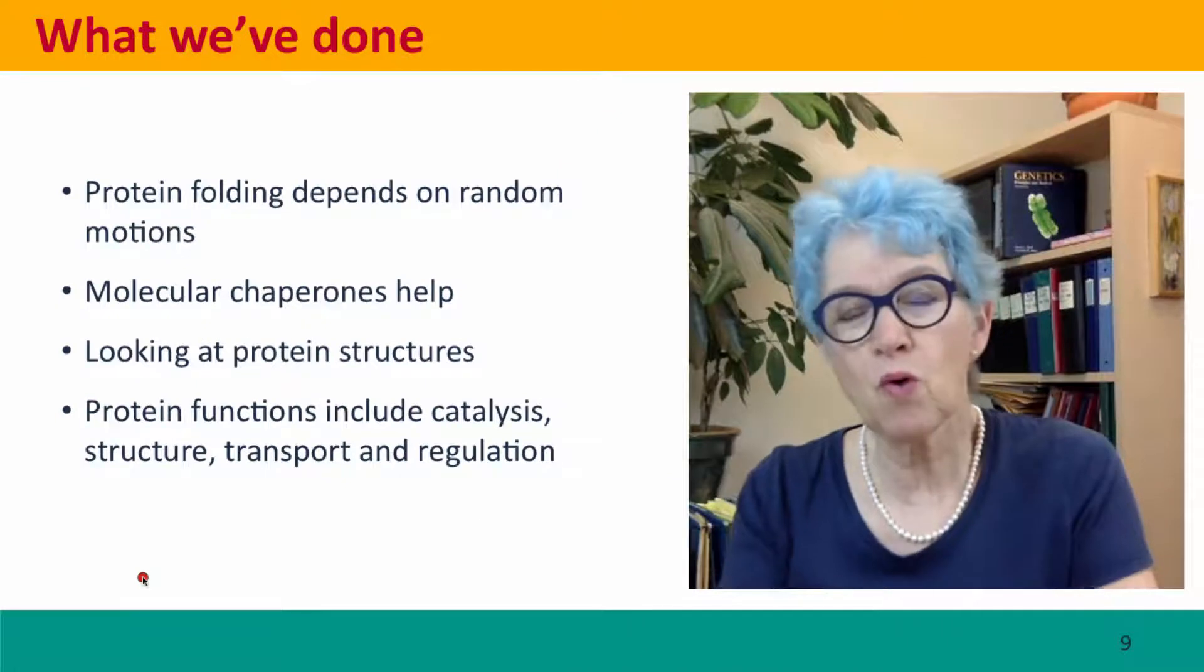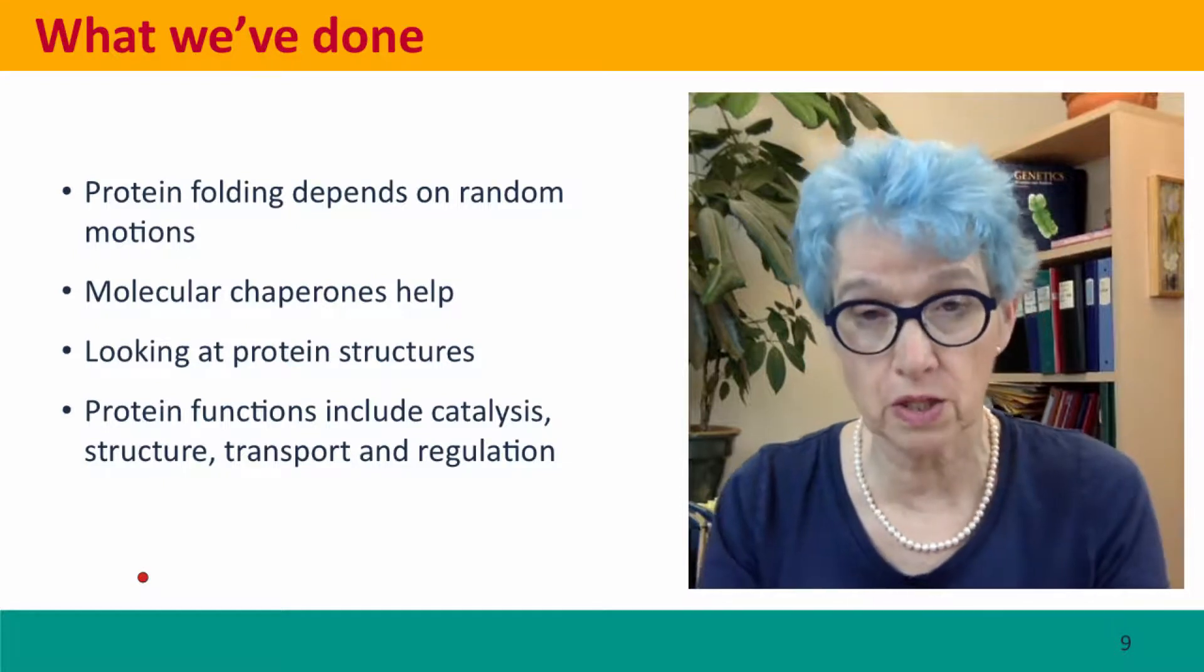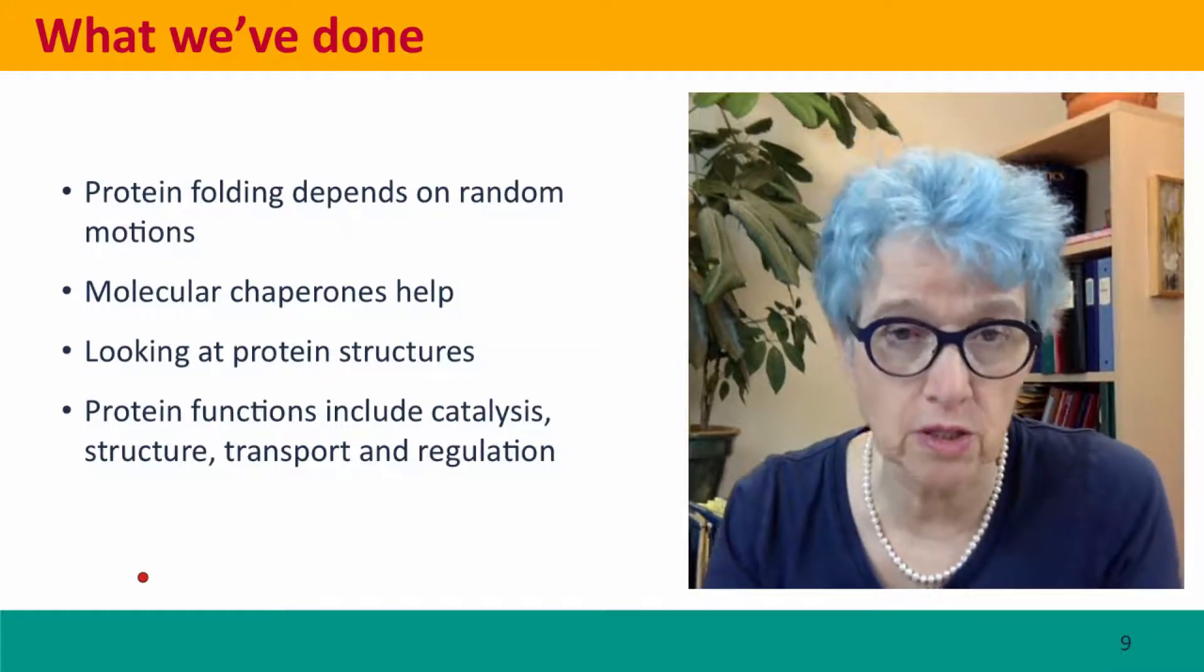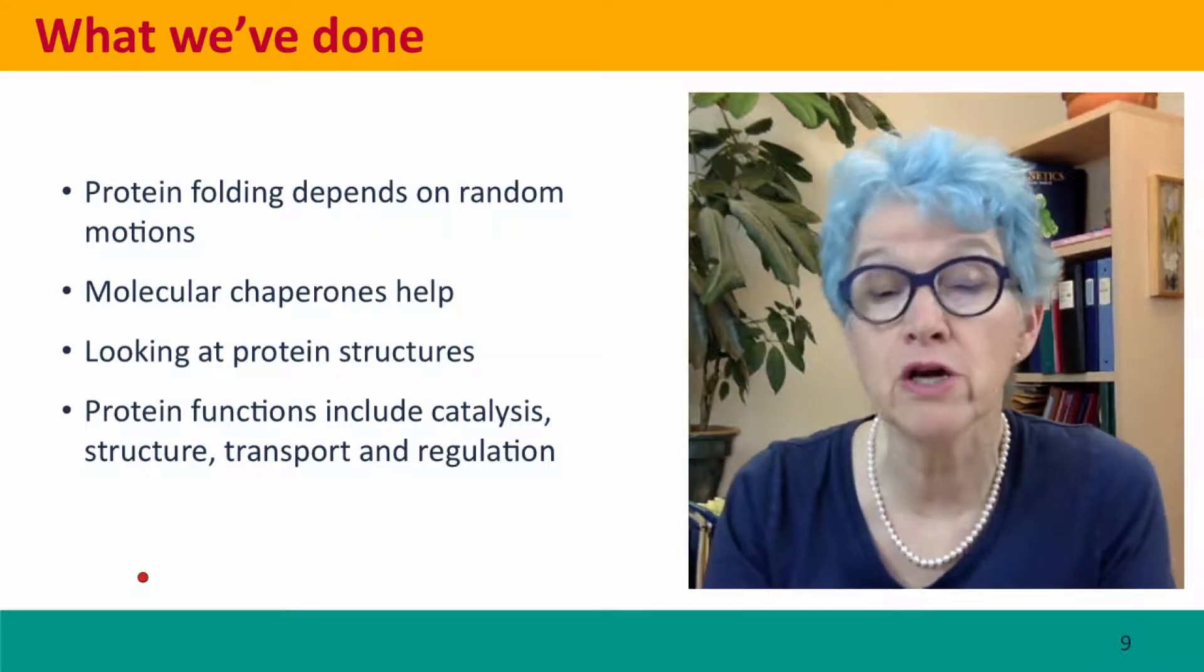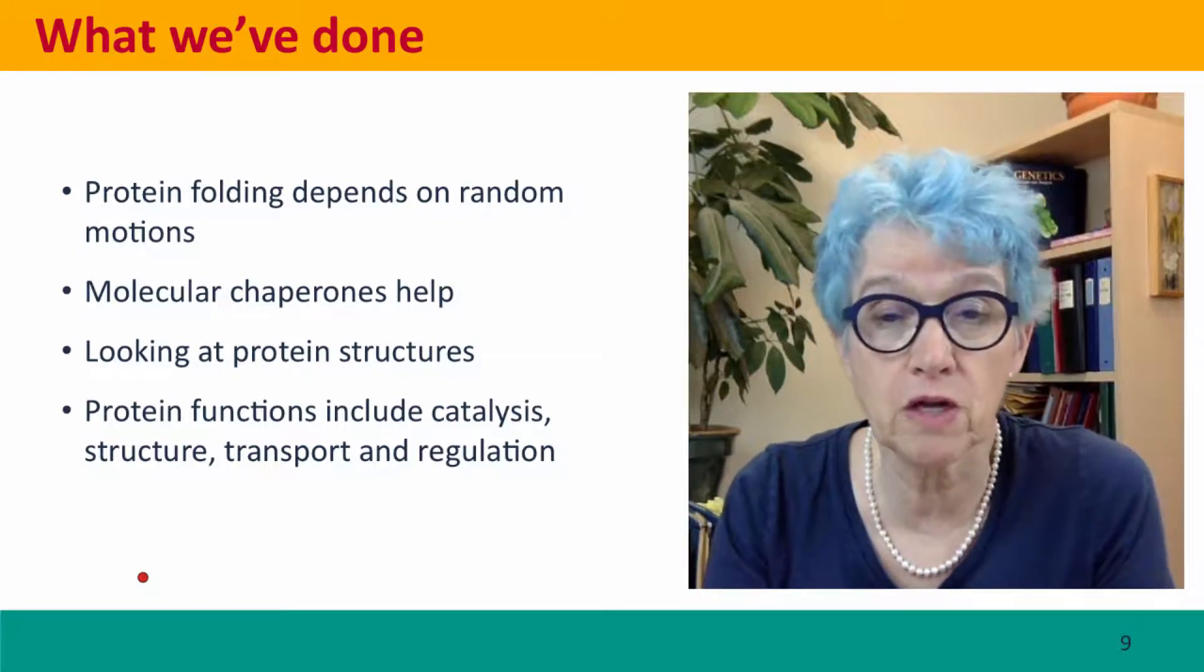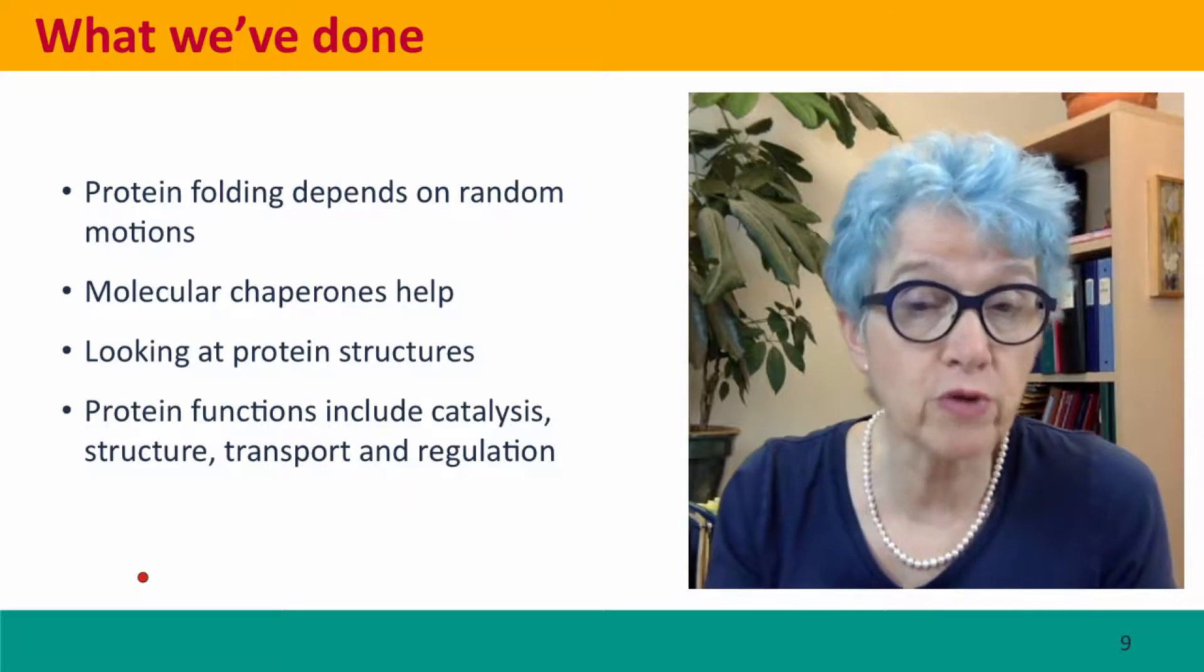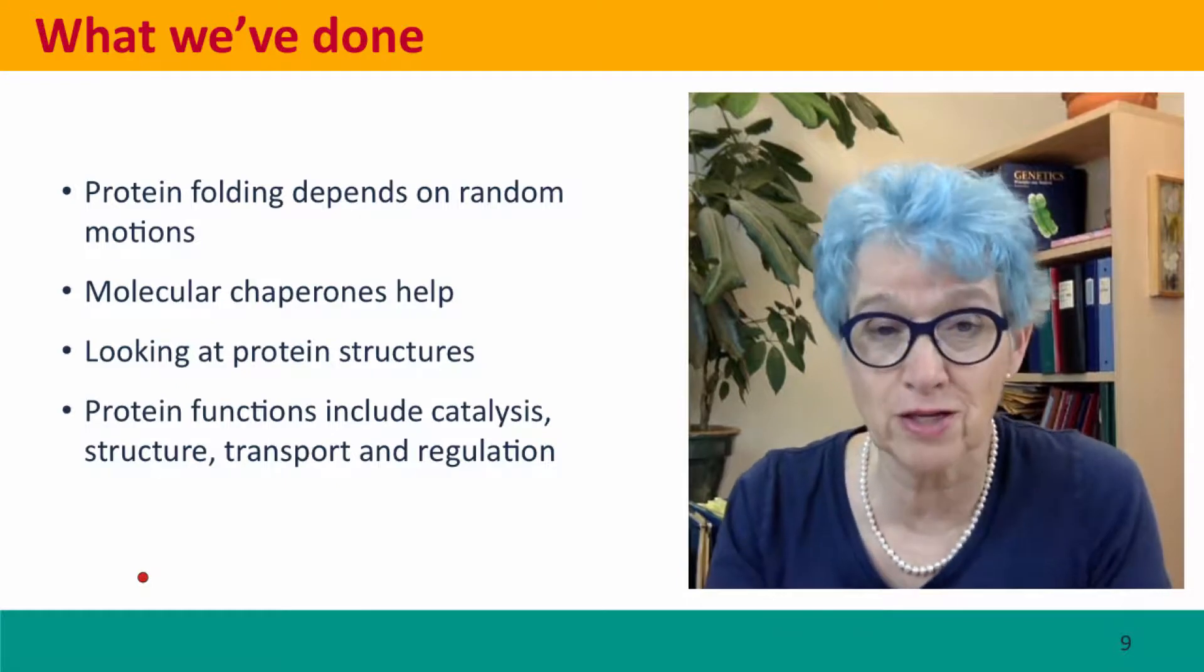Now what we've done, we talked about how protein folding depends on random motions of the protein bringing together parts of the protein chain that can form stable interactions. This folding is assisted by special proteins called molecular chaperones that help make sure that the right interactions form so the protein folds in the right way. We looked at some protein structures, different levels of protein structure, and we talked briefly about the different kinds of protein functions, which we're going to talk about in detail in the next lectures.